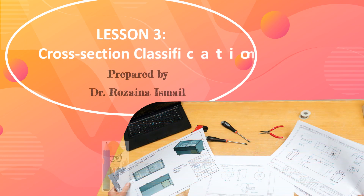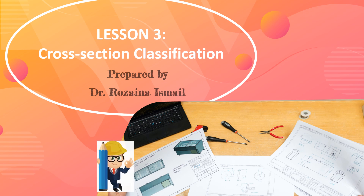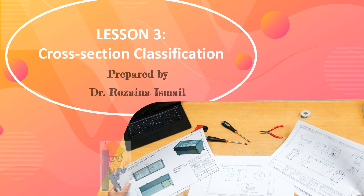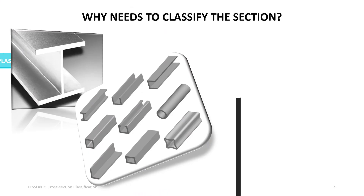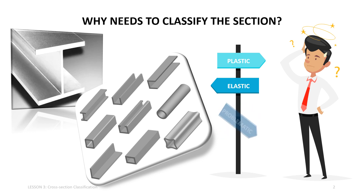Hi, welcome back to the basic timber and steel design. We are now proceeding to Lesson 3: cross section classification. We had a look at plastic and elastic properties of the beam. Now, what determines whether we have to consider a beam to be plastic or elastic is its classification, and today we will be looking at the classification of steel sections.